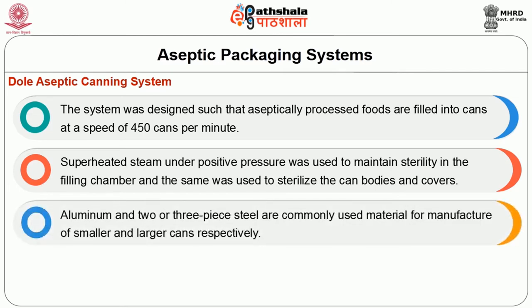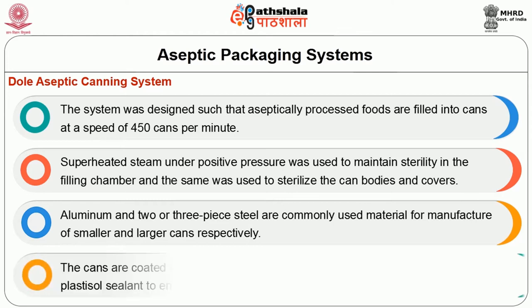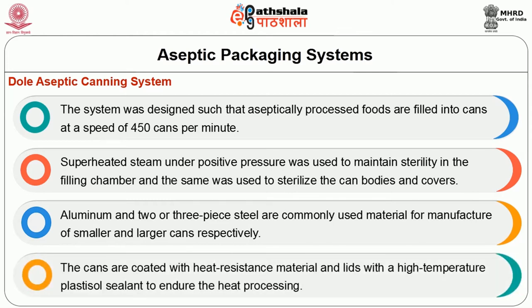Aluminium and 2 or 3 piece steel are commonly used materials for manufacture of smaller and larger cans respectively. The cans are coated with heat resistant material and lids with a high temperature plastisol sealant to endure the heat processing.